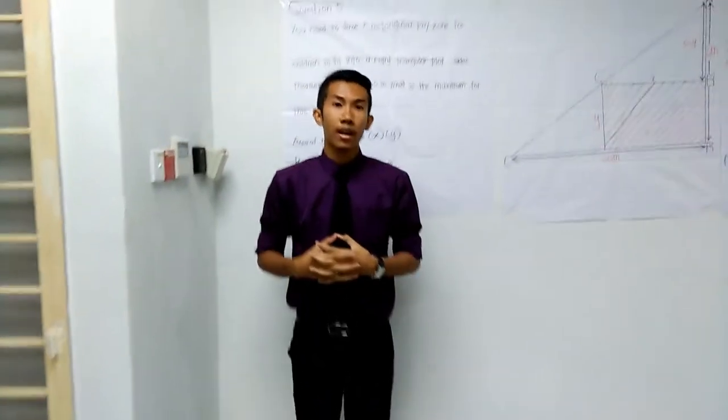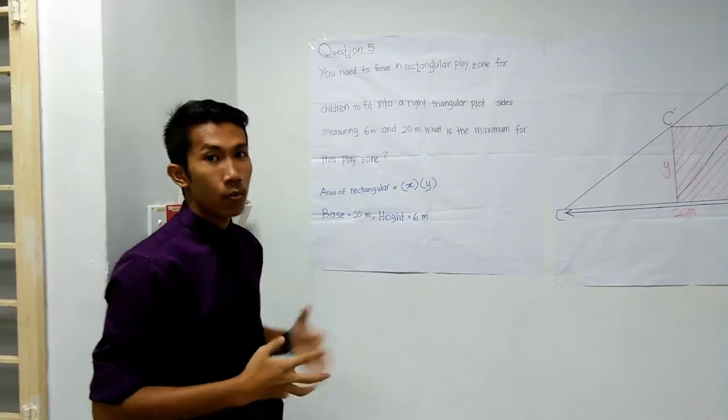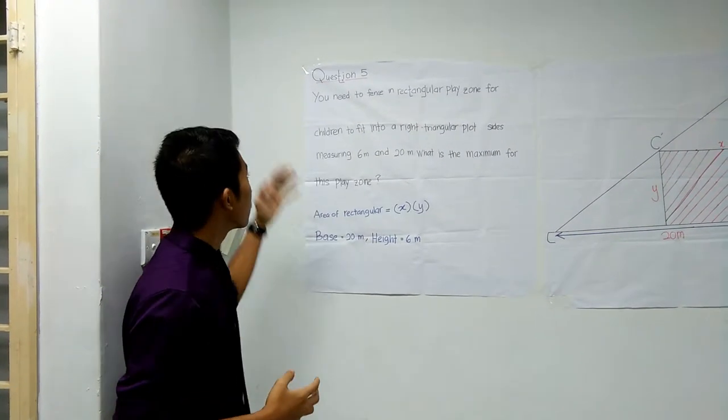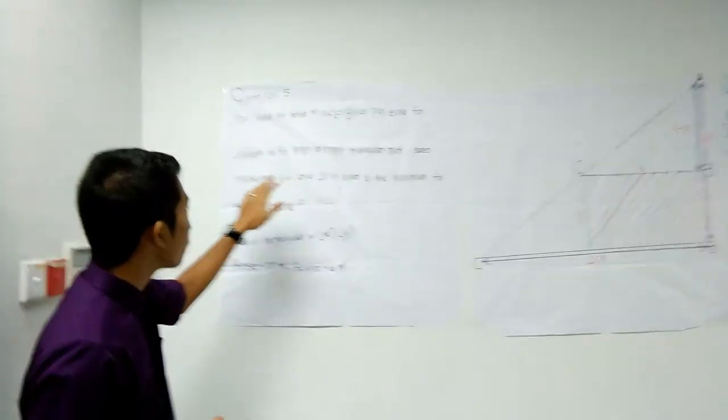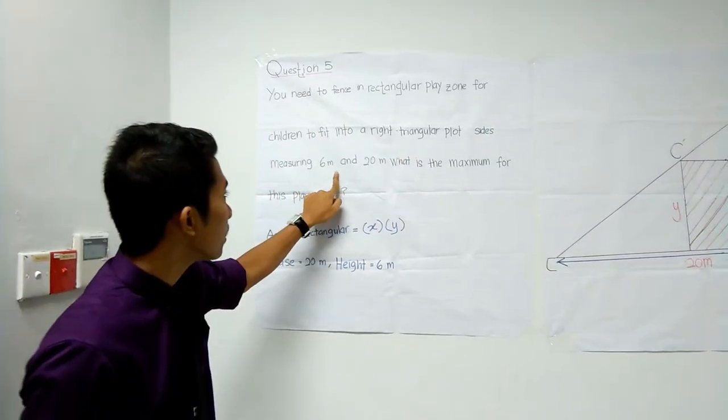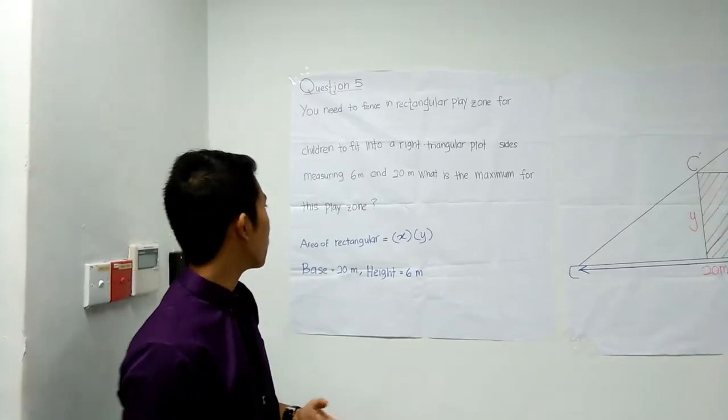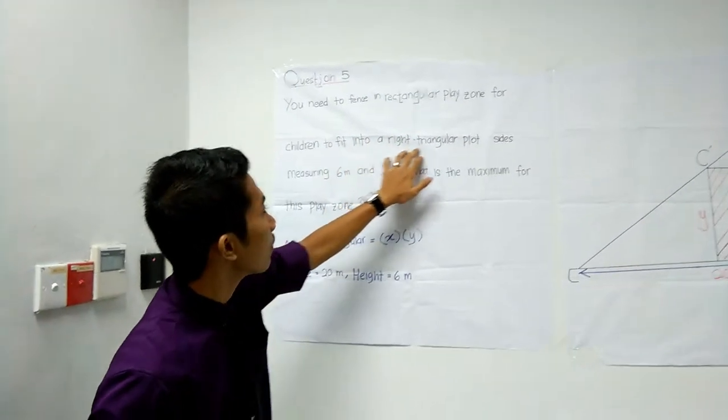I'm Bihwama Adil and I will explain to you guys about the question part. The question that we use is a rectangular playground playtime for children to fit into a triangular area. The triangle starts measuring 6 meters and 20 meters. What is the maximum for the placement? We want to put the rectangle into the triangular area.